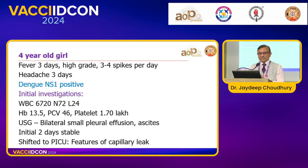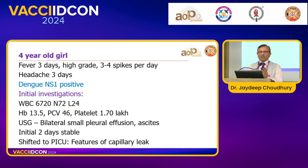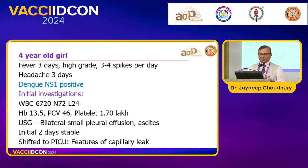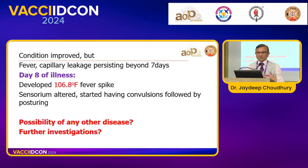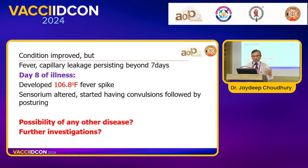The next case is a four-year-old girl with high-grade fever — three to four spikes per day for three days. Dengue NS1 was positive. WBC 6,700 mainly neutrophilic, hemoglobin 13.5, PCV 46, platelets 1.7 lakhs. Ultrasound showed bilateral small pleural effusion and small ascites. The child was initially stable and shifted to PICU for capillary leak. Fever and capillary leakage persisted beyond seven days, and on day eight the child developed high fever of 106.8°F, altered sensorium, convulsions, and posturing.